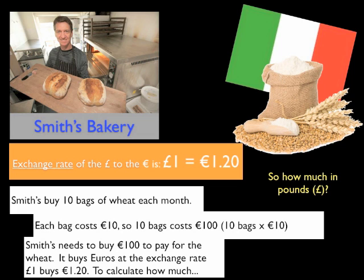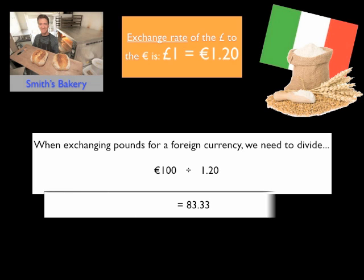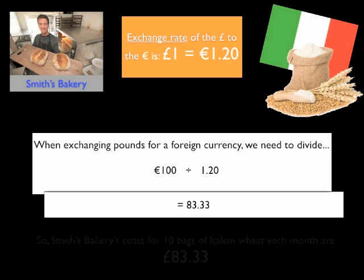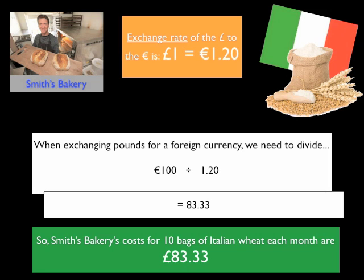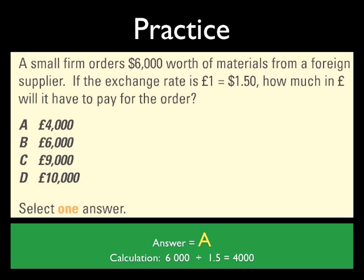Let's have a look at how this calculation is made. When exchanging pounds for a foreign currency, we need to divide the amount in the foreign currency by the exchange rate. We know that Smith's need to pay €100 for this wheat and that the exchange rate to the pound is €1.20. So if we divide 100 by 1.20 we get 83.33 — Smith's Bakery needs to pay £83.33 for the 10 bags of Italian wheat it uses each month. You might need to rewind that and go through it again to make sure you fully understand how that works.